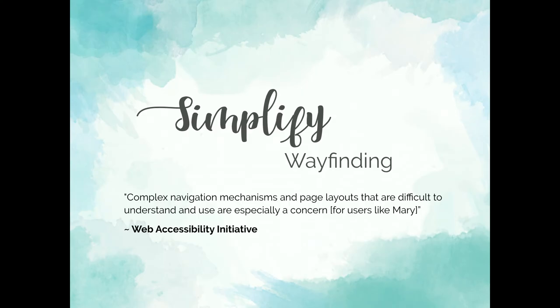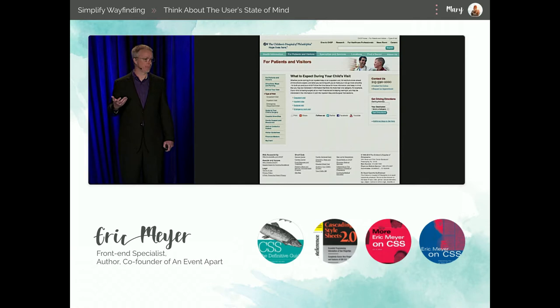Now that we've talked about humanizing content, how can we help someone like Mary navigate around our content? Complex navigation mechanisms and page layouts that are difficult to understand are especially a concern for users like her. Of course, whenever we're designing anything, we always want to help users find content in the most efficient way possible. But for someone like Mary, we have to keep in mind that things we may think are simple for the average user are actually not so simple to her. I really like a talk by Eric Meyer called 'Designing for a Crisis' that outlines that notion.